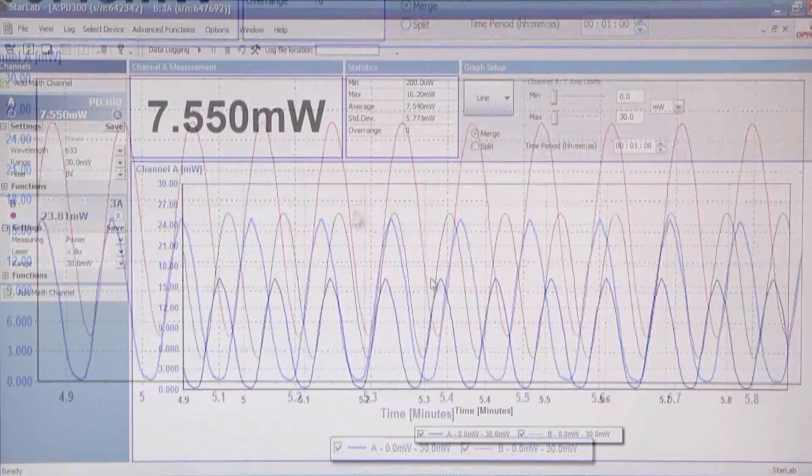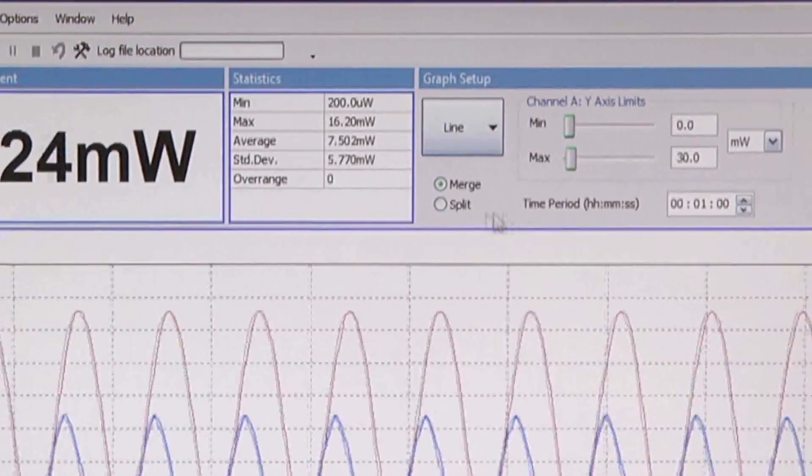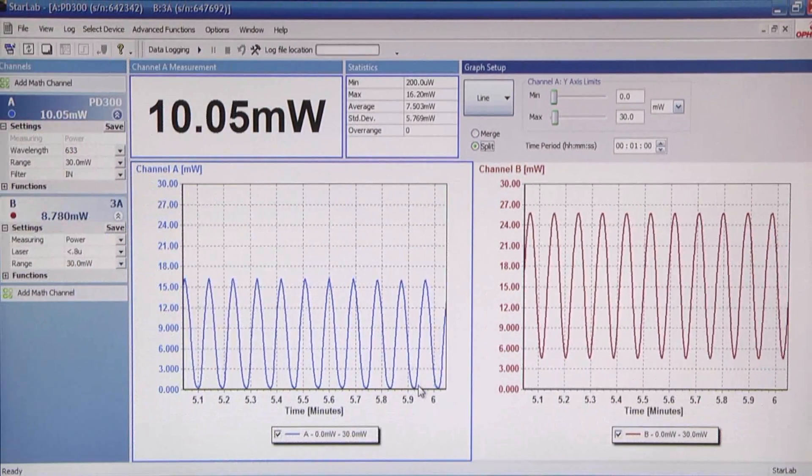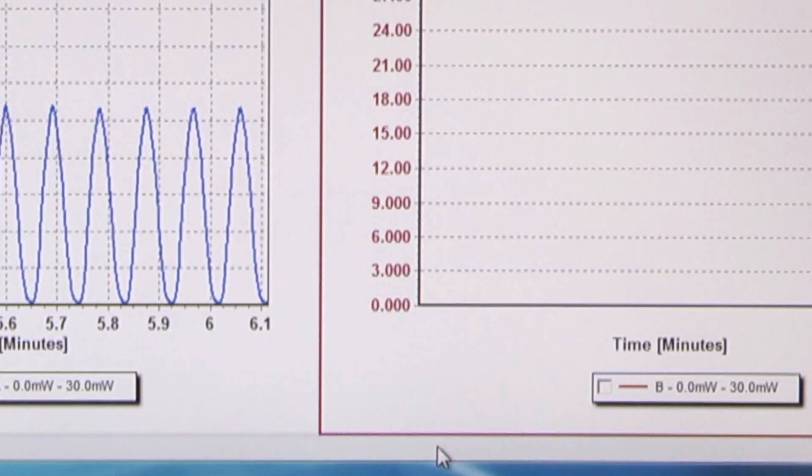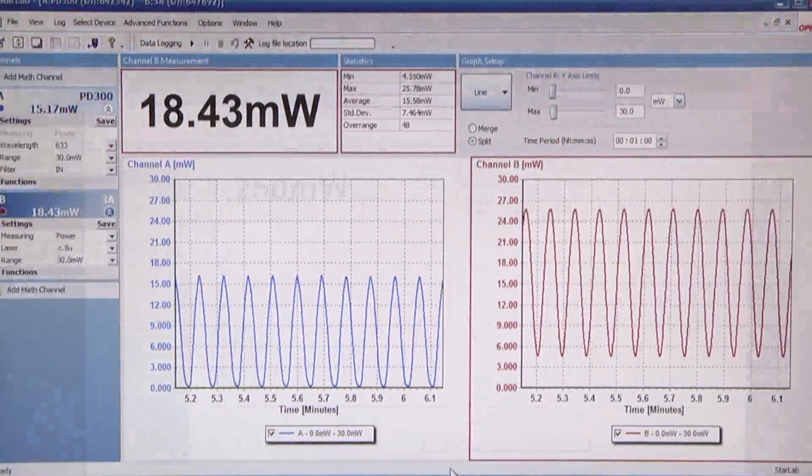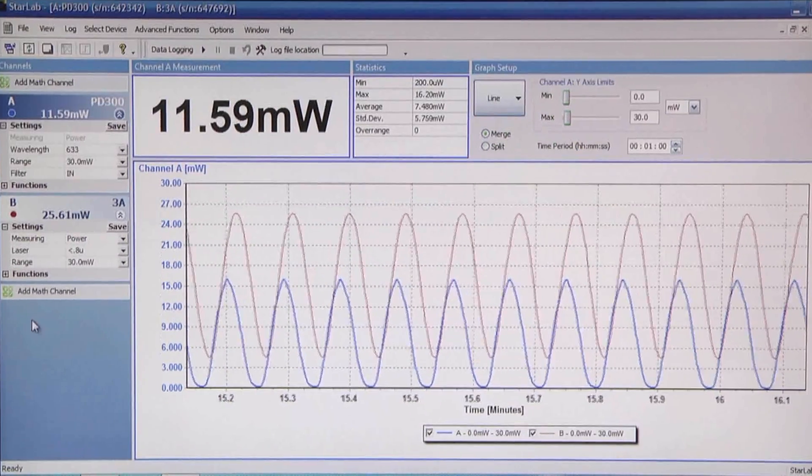If we want to see two separate screens, then we click split over here. If we don't want to see a particular graph, we unclick the box here. Now let's look at how the math channel operates.